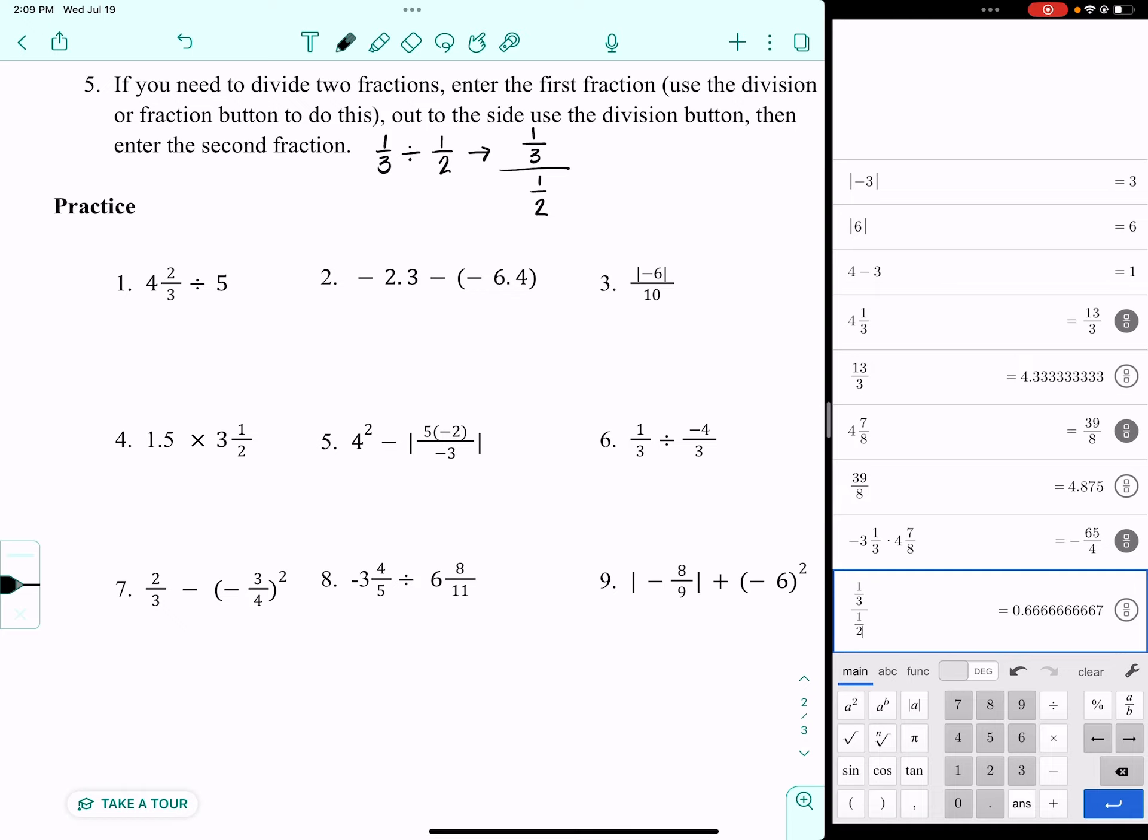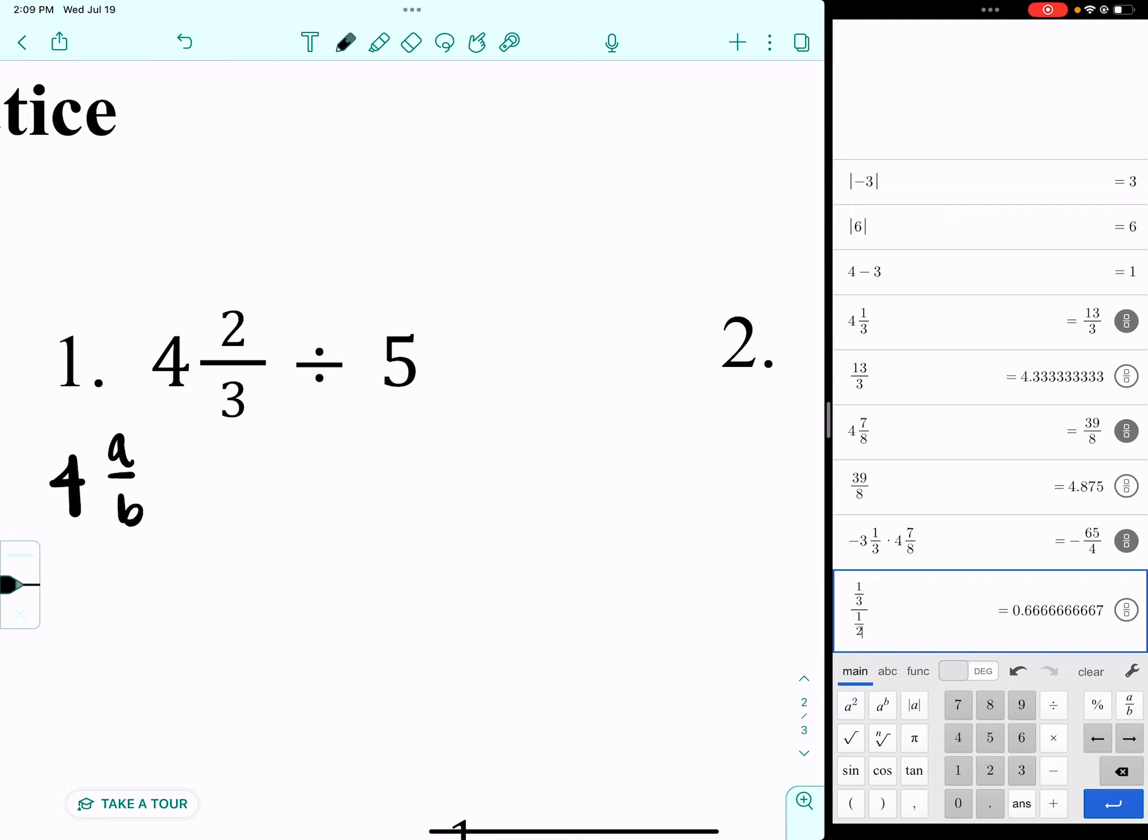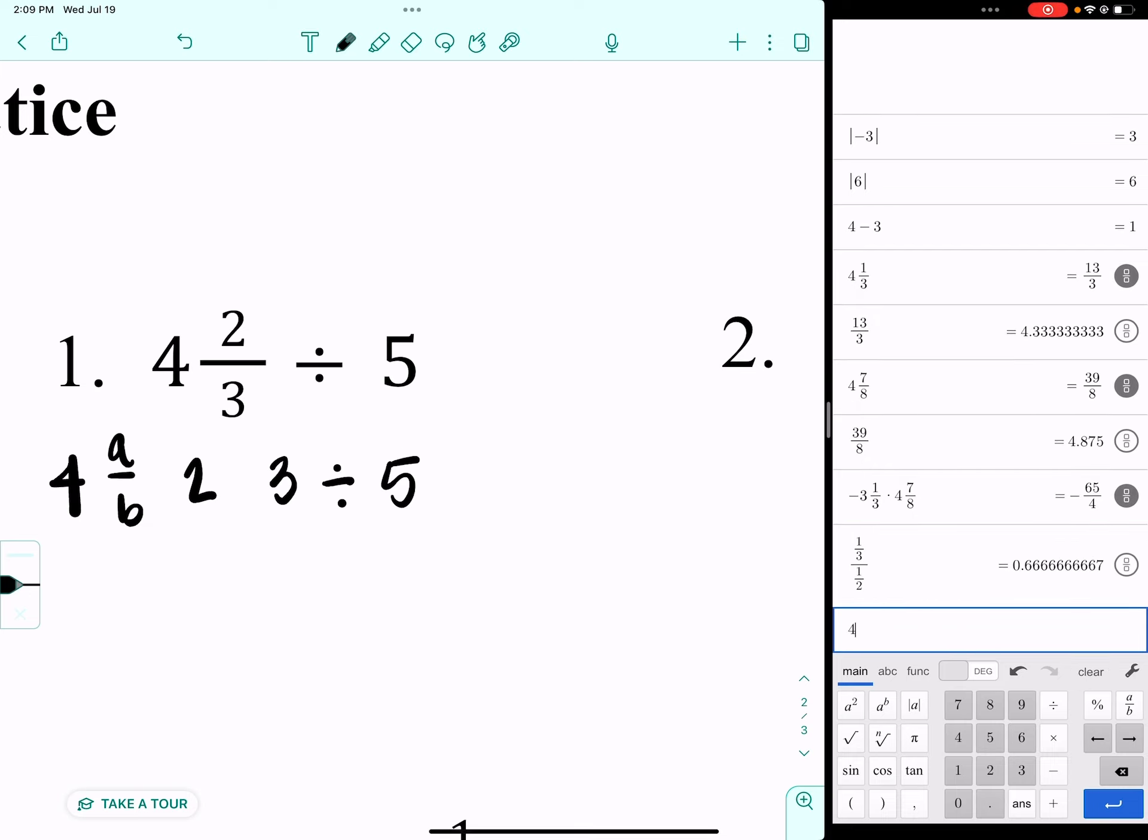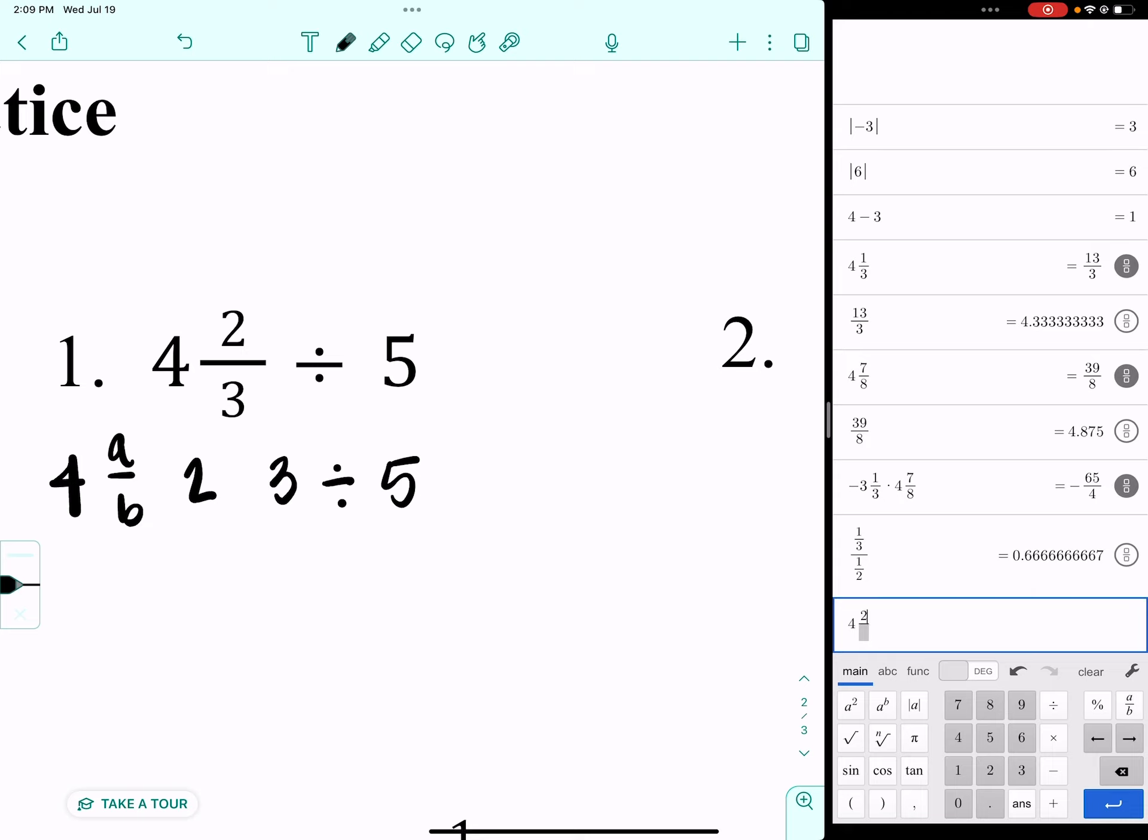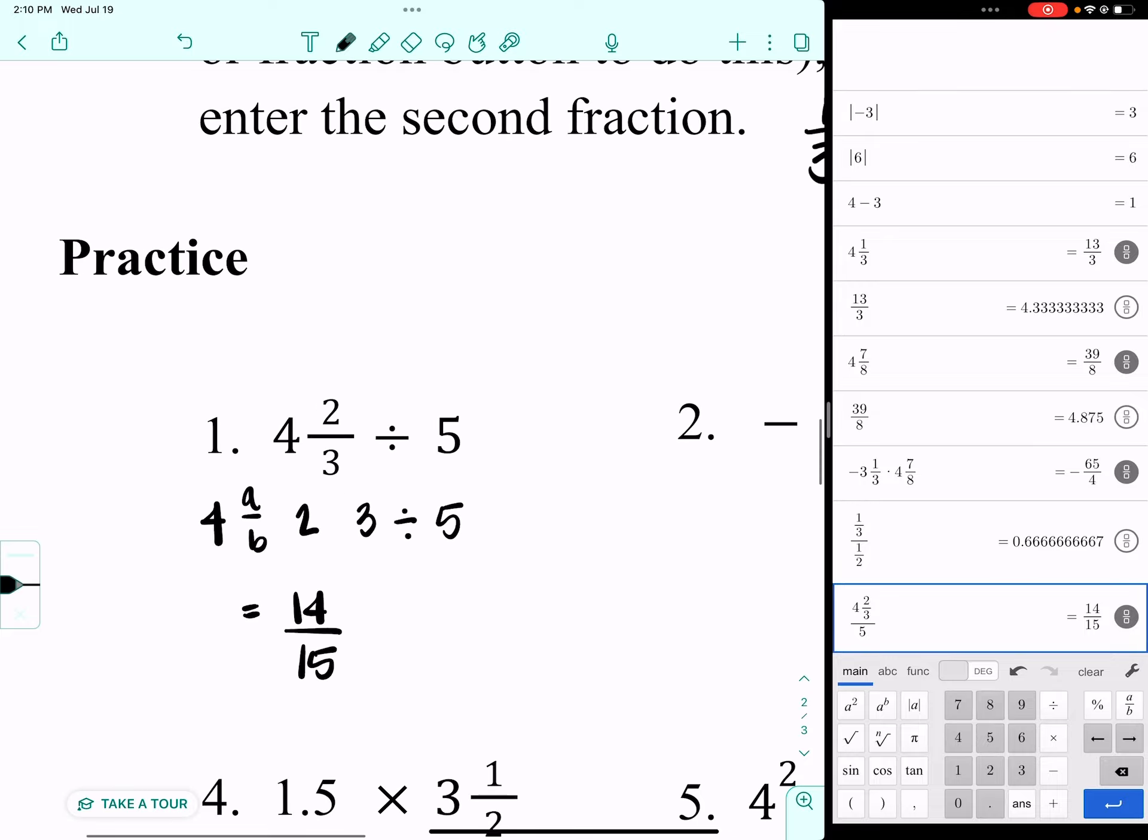Let's look at a few of these and how we might plug them into the calculator. I'm going to take a look at one. I would type this in as four, and then I would push that guy, and then I would put the two and the three, then the division button, and the five. So four, and then my fraction button, two on the top, three on the bottom, divided by five. You can give your answer as a decimal or as a fraction. So that one is 14 fifteenths.